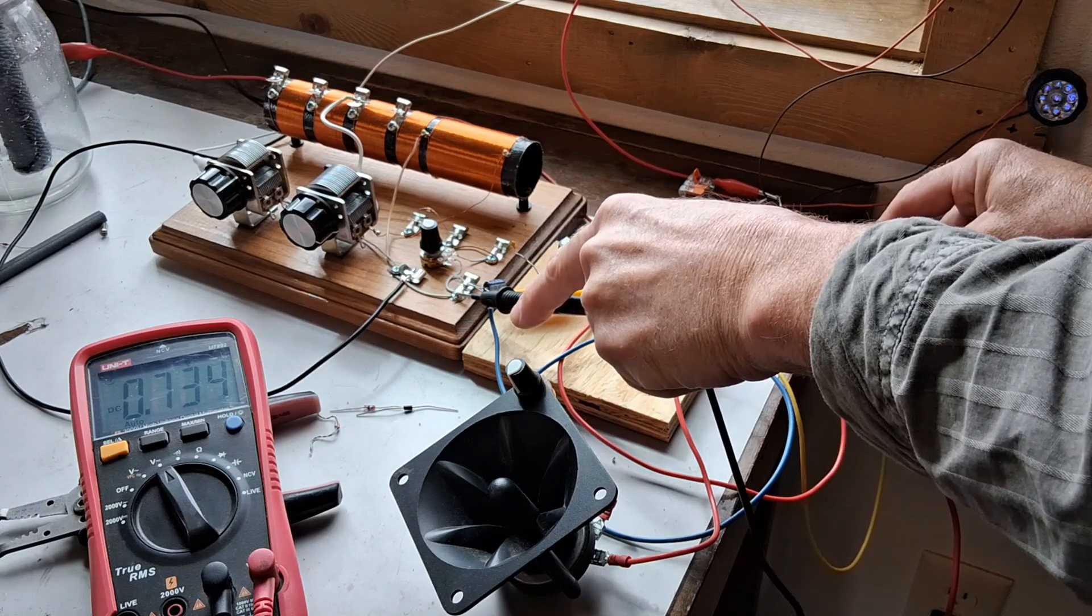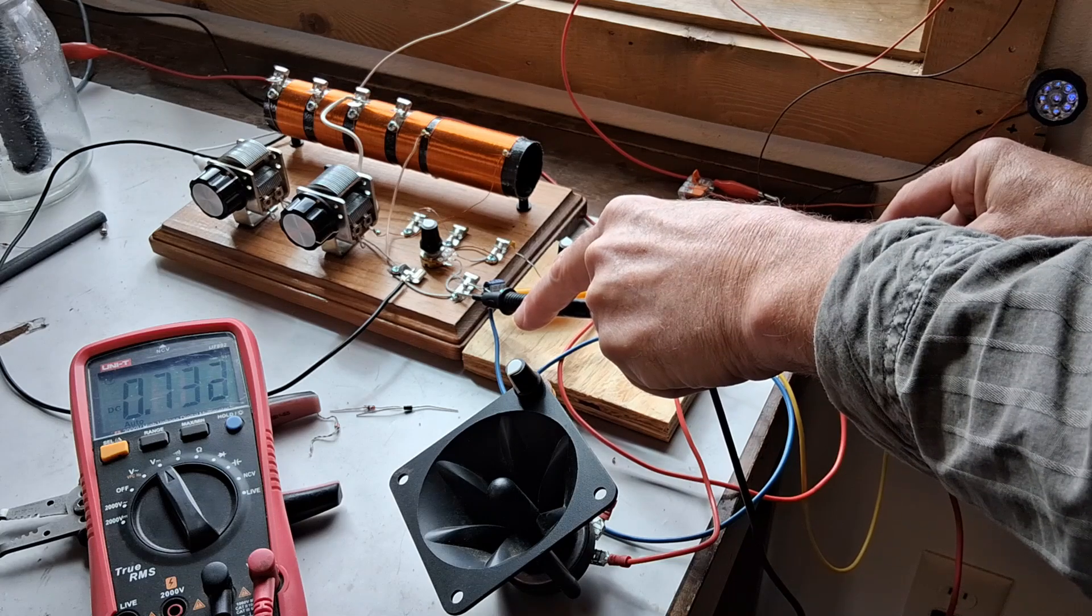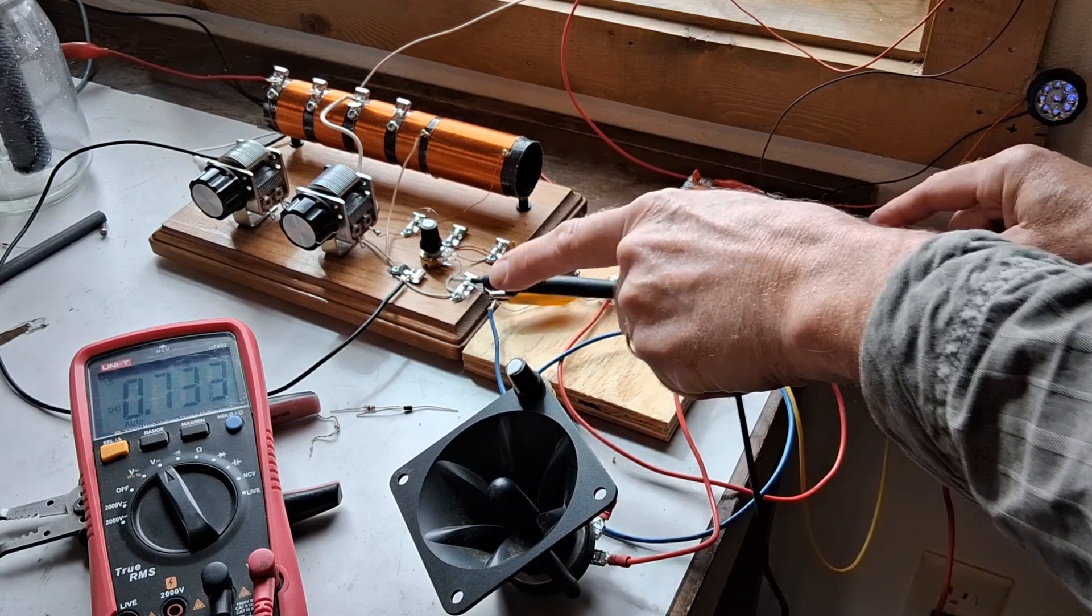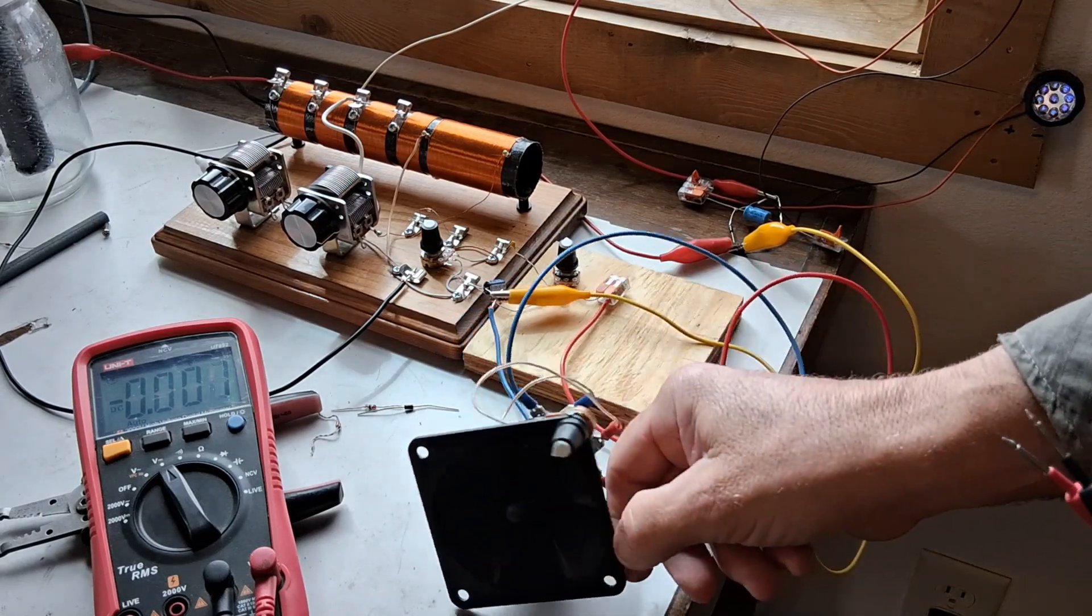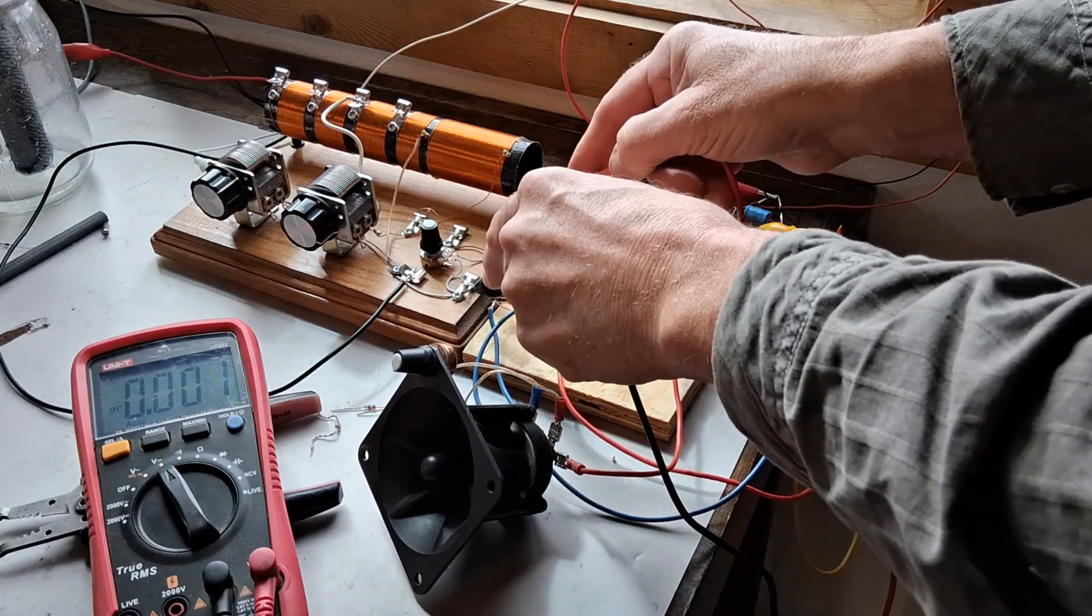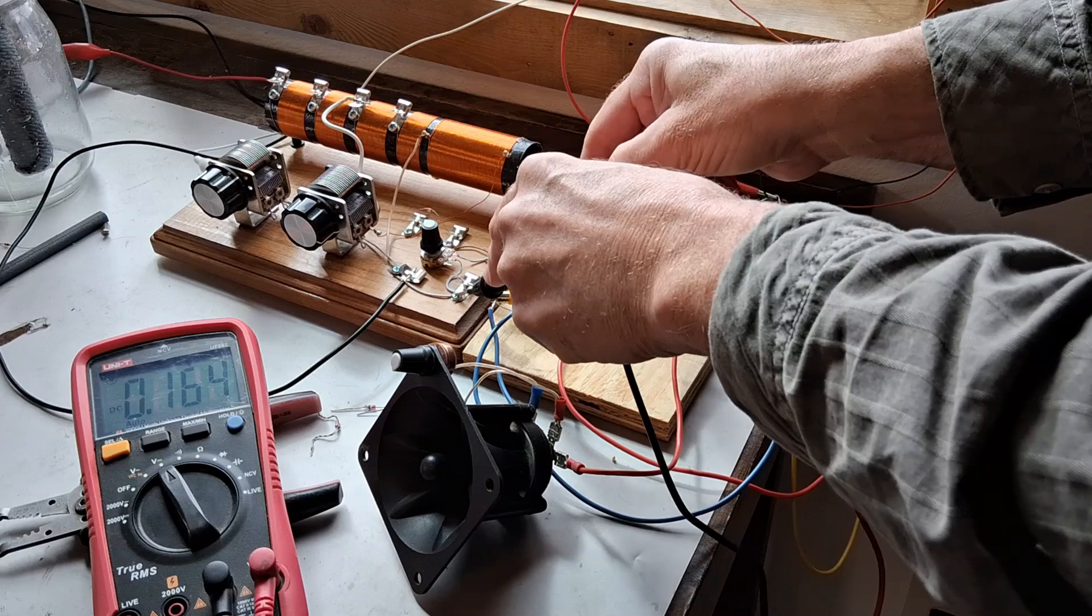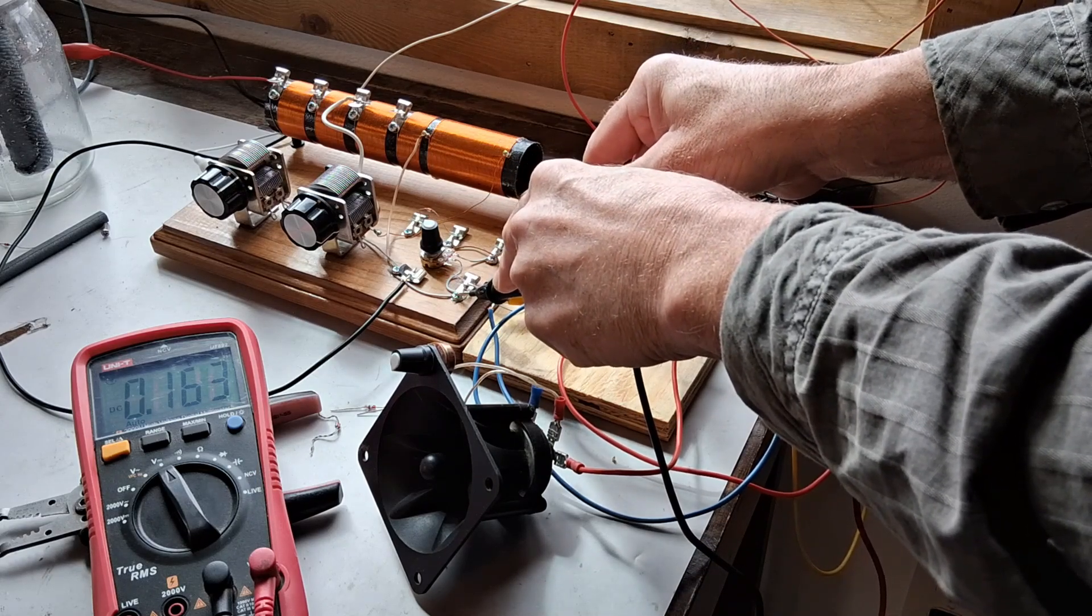It's operating at 0.734 volts right now—that's about the lowest I've seen it operating at. That's the voltage drop when I got my two grounds connected together. That's what's coming off the crystal radio.